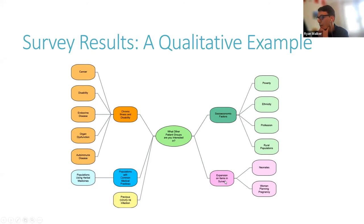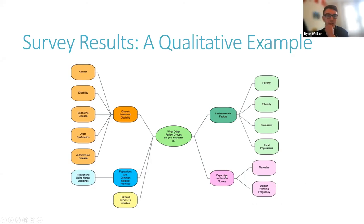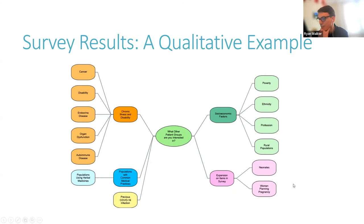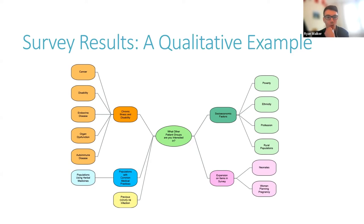We also see people expanding on items in the survey — for example, children and adolescents. People wanted to understand about research on vaccinating neonates, and in relation to pregnancy, there was an interest in understanding the safety of vaccination in women planning pregnancy. There are a great number of overlaps in the topics and themes encompassed by these areas, and so what we wanted to do was narrow that down and really understand where the consensus lies as to exactly what it is for these topic areas that people want to know more about.